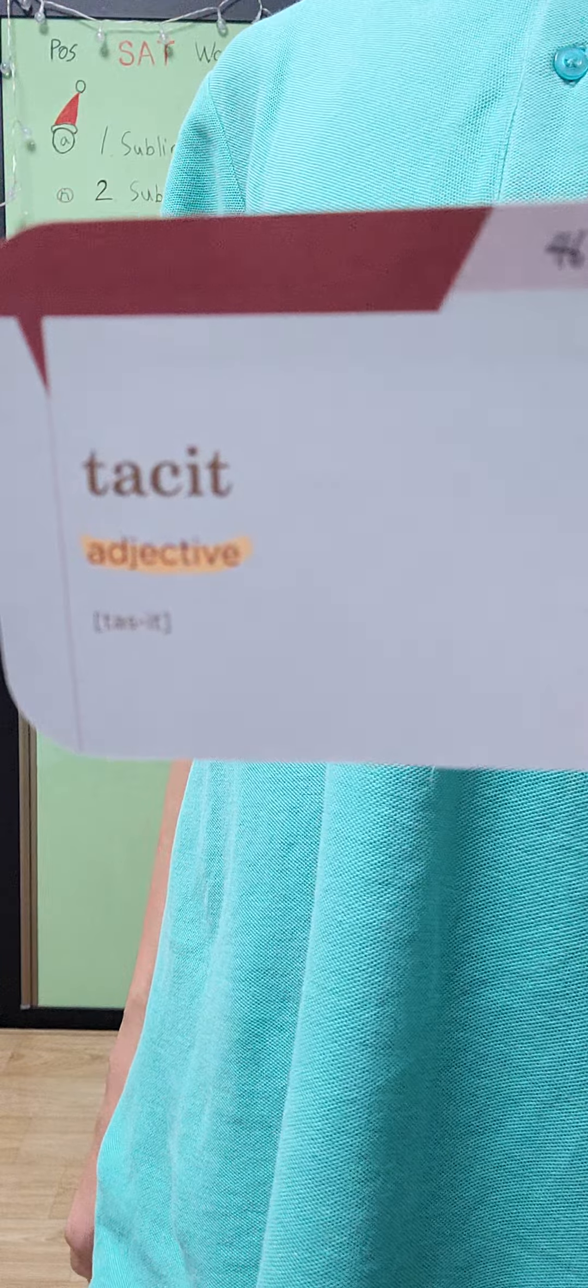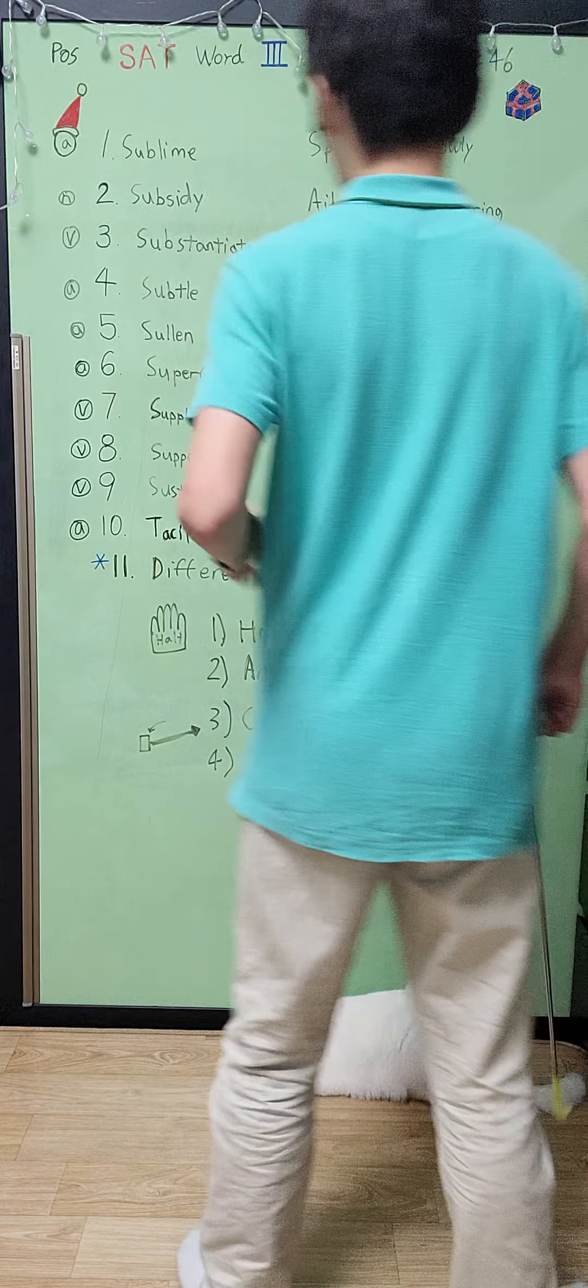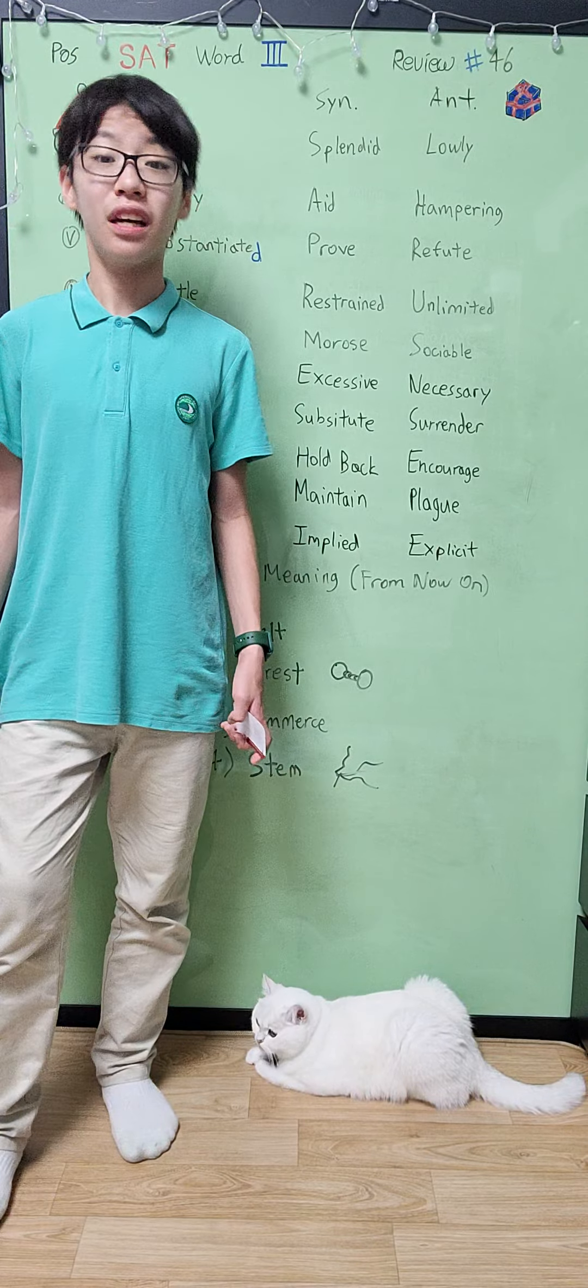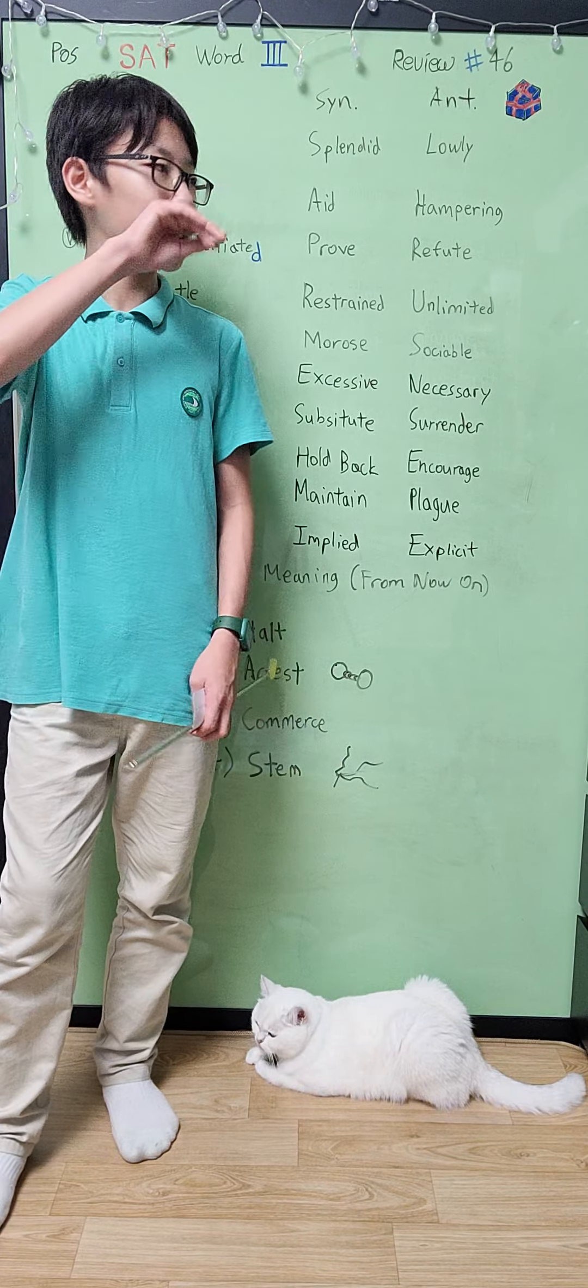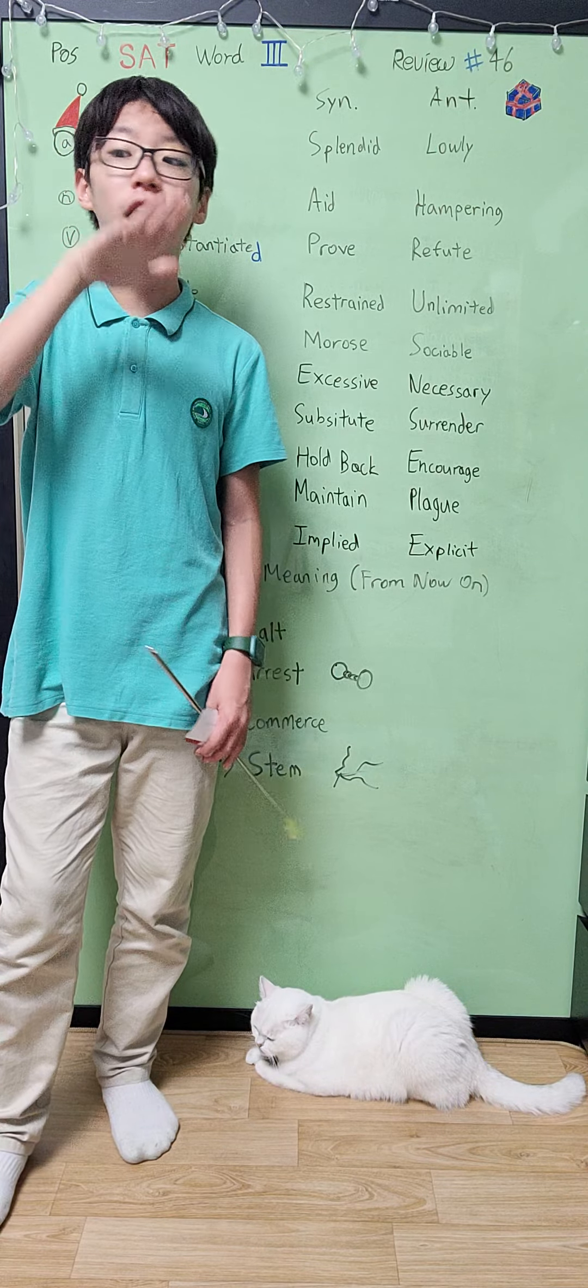And then our last word is tacit, which is an adjective that means we understood something without being spoken. So it's like implied, and this is what ancient cave people did in the olden times because they did not know what this is, so they're like "uh uh uh bra bra bra bra."